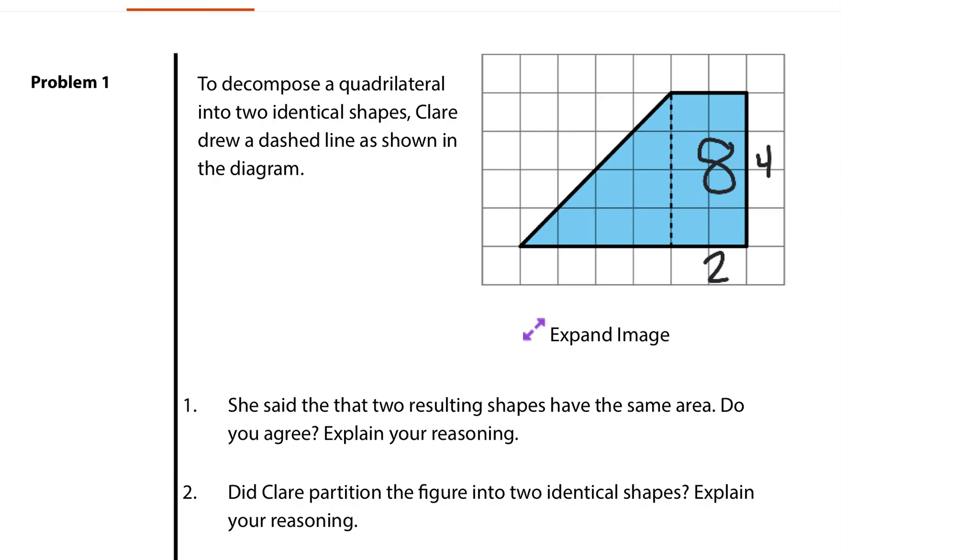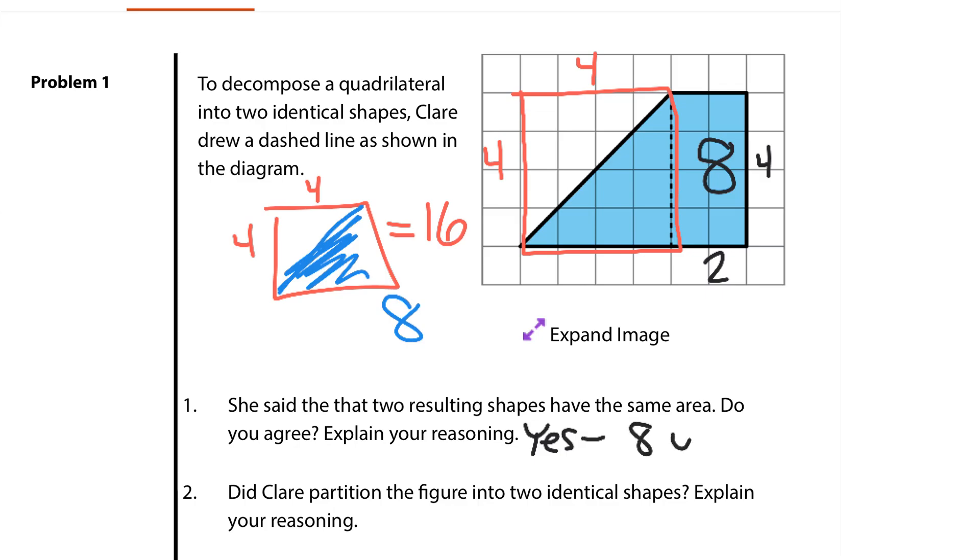In looking at the triangle, if I complete the drawing of a square here, this square is 4 by 4. A 4 by 4 square, 4 times 4, has an area of 16. This blue triangle looks to take half of it, and half of 16 is 8. So I would say yes, both have the same area of 8 square units.